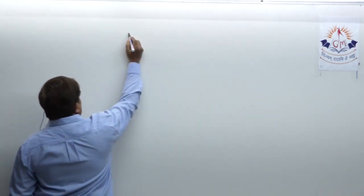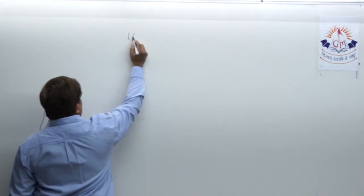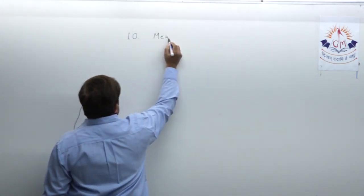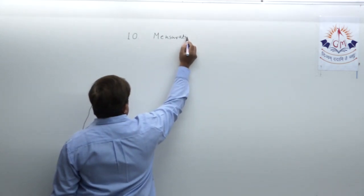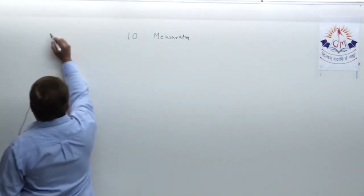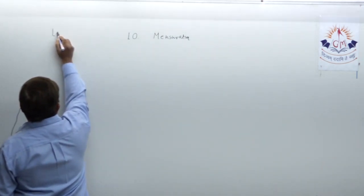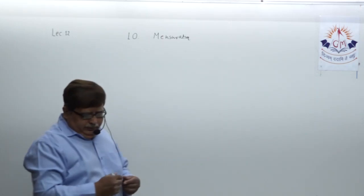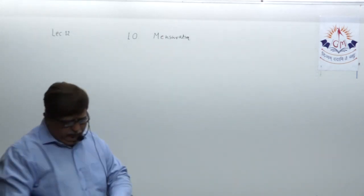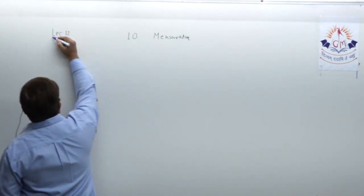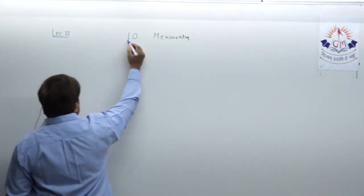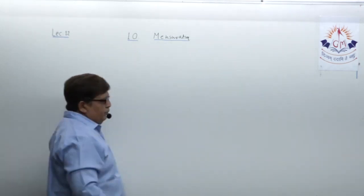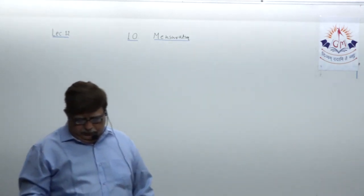So today, chapter 10 — today you are attending the last lecture in this particular chapter. You are going to attend lecture number 12, the last one in this chapter, where we are going to discuss about surface area and volume of cylinder. That's our topic of discussion today.